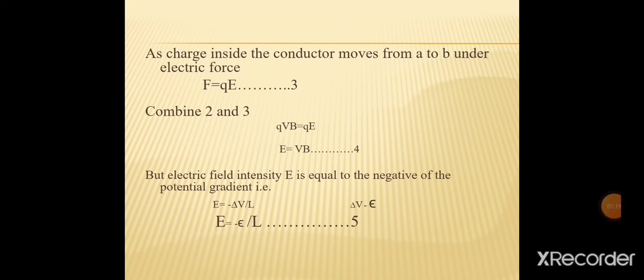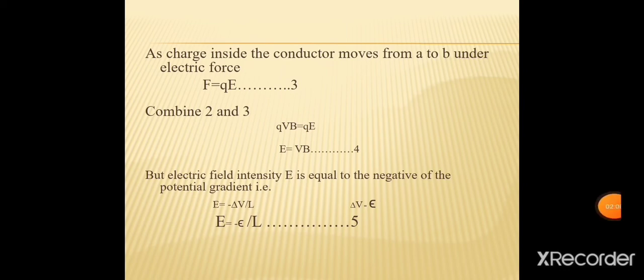Electric field intensity E is equal to the negative of the potential gradient: E = −ΔV/l۔ Equation 1 میں ہم نے prove کیا تھا کہ ΔV = e، تو ΔV کو e سے replace کریں: E = −e/l (equation 5)۔ یہاں capital E electric field intensity ہے اور small e electromotive force ہے۔